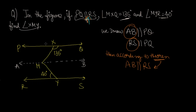So with the theorem, since AB and RS are both parallel to PQ — the same line — we can conclude that AB is parallel to RS. Now we use this to solve the question and find the required angle value.